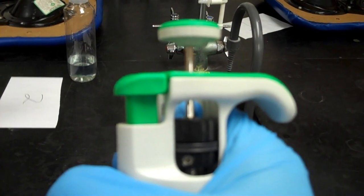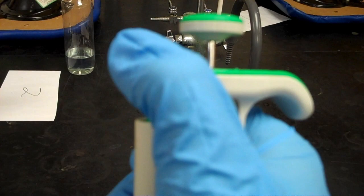Now that you're done pipetting, you must eject the tip. The eject button is here, hold it over the trash and hit the button with your thumb.